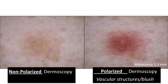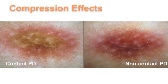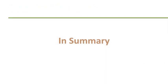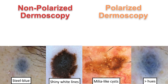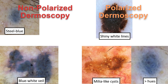So more vascular blush and more shiny white structures are seen with polarized light. When visualizing vascular structures, we would prefer to use polarized dermoscopy in the non-contact mode, but if we need to use the contact mode, we need to remember that visualization of vascular structures will be dependent on the amount of pressure we are applying to the skin. In summary, polarized and non-polarized dermoscopy provide complementary information of the same lesion, with the steel blue color better visualized with non-polarized light and shiny white structures better with polarized light.